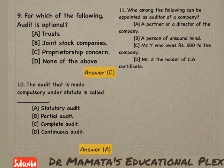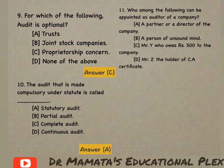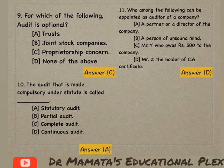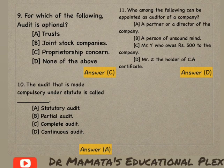Next: Who among the following can be appointed as auditor of a company? A partner or a director of the company; a person of unsound mind; Mr. Y who owes Rs. 500 to the company; Mr. Z the holder of a CA certificate. Option D, Mr. Z the holder of a CA certificate, is the correct answer.